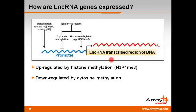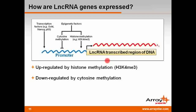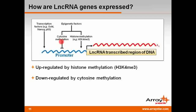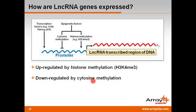By contrast, LNCRNA genes, like protein coding units, become methylated at cytosine residues, most notably at CpG dinucleotides. CpG methylation, primarily in promoter regions, is a well-known epigenetic DNA modification that tends to repress gene expression in so-called closed chromatin or heterochromatin.